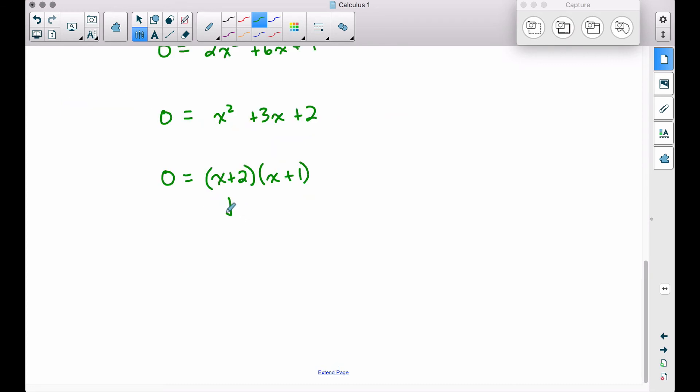The last step here is we take each one of these factors and we set them equal to zero. This is where your college algebra skills come into play. All of this factoring that we're doing, I mean everything from the derivative after we found the derivative on down, all of this is college algebra. We get a critical value here of negative two and a critical value here of negative one once we solve these two equations here.